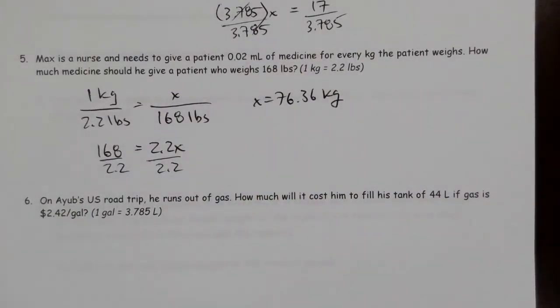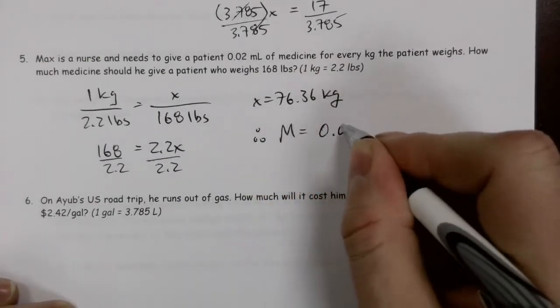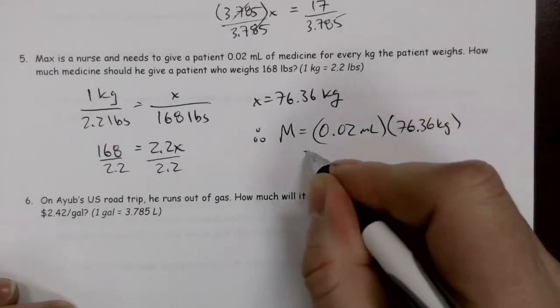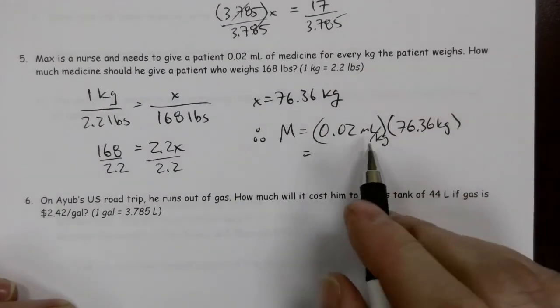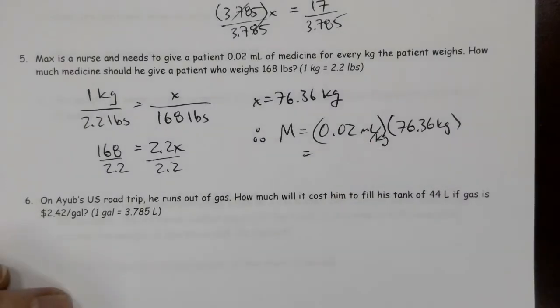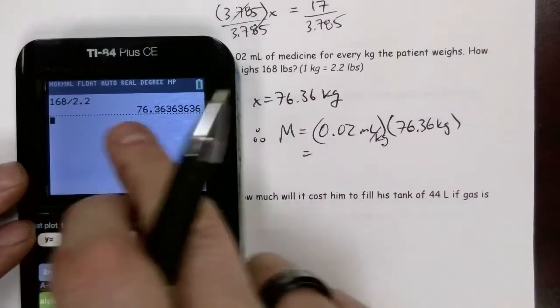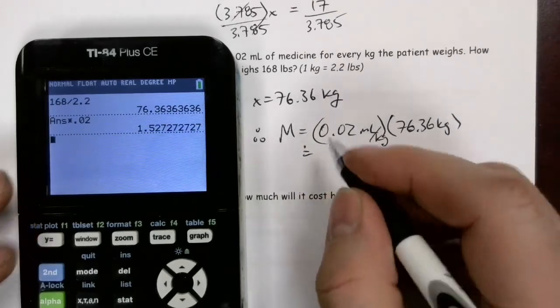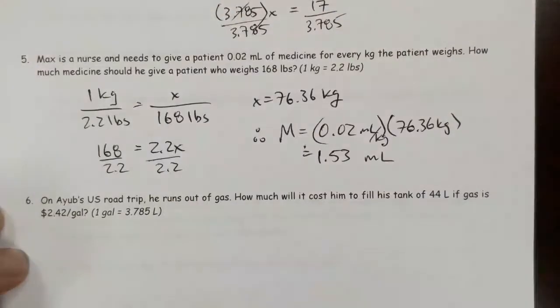The question says that he's got to give 0.02 milliliters for every kilogram. So the medicine that we give is going to be 0.02 milliliters per kilogram times 76.36 kilograms. Just to make sure that I don't make any rounding errors here, I'm going to use the number that the calculator had calculated and multiply that by 0.02. And I get, when I round that, approximately 1.53 milliliters.